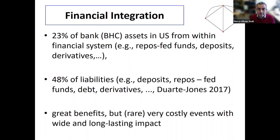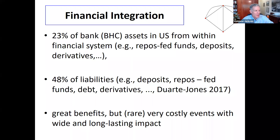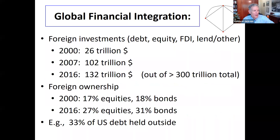Financial integration has led to a very dense network of interactions between different financial organizations. For instance, 23% of bank holding company assets in the US are from within the financial system and 48% of their liabilities. This kind of structure offers great benefits in terms of liquidity and risk sharing, but it also can lead to difficulties in terms of systemic risk. In terms of financial integration across borders, foreign investments went from 26 trillion in 2000 to 132 trillion in 2016, and ownership in equities and bonds went from about 17-18% up to 27-31%.